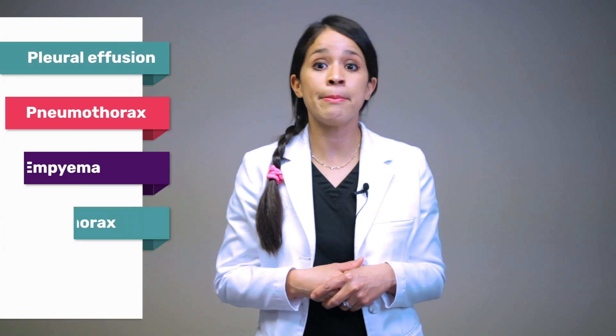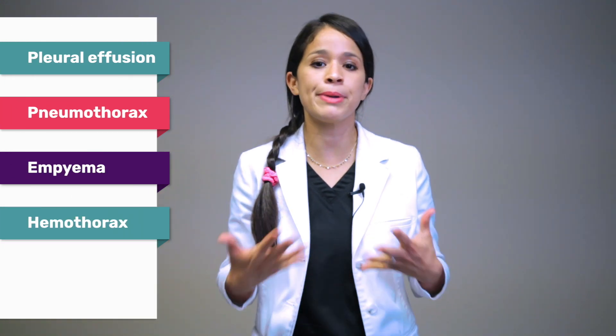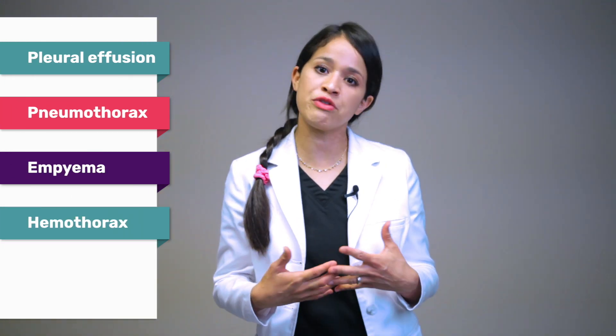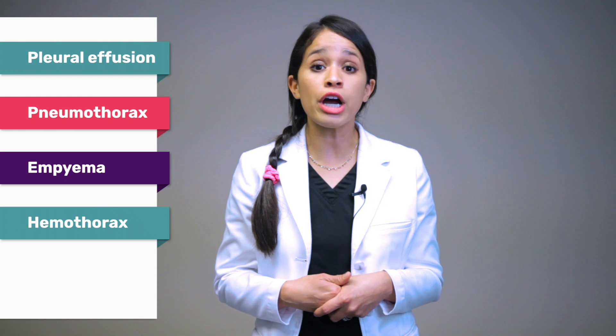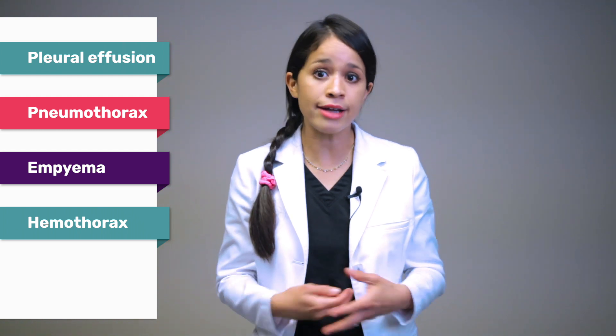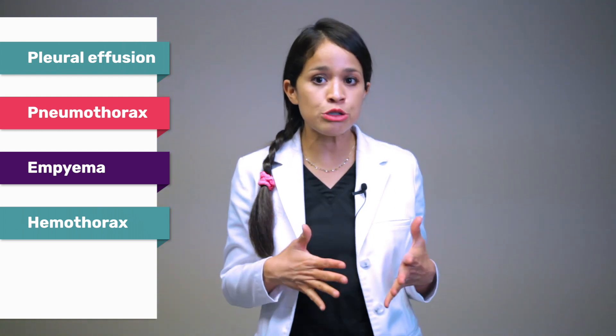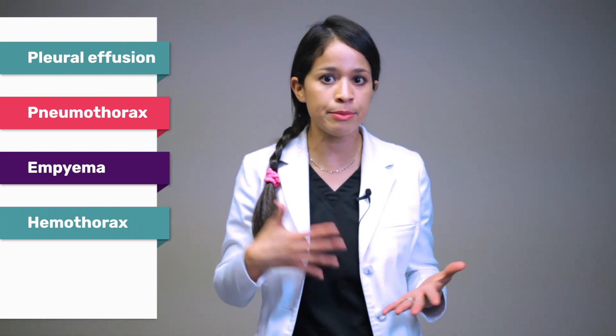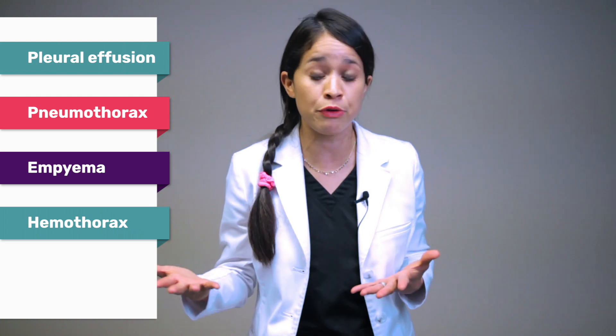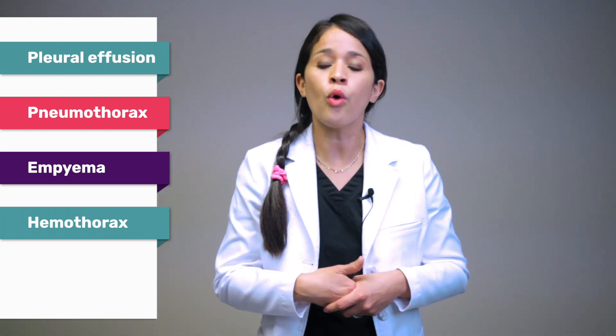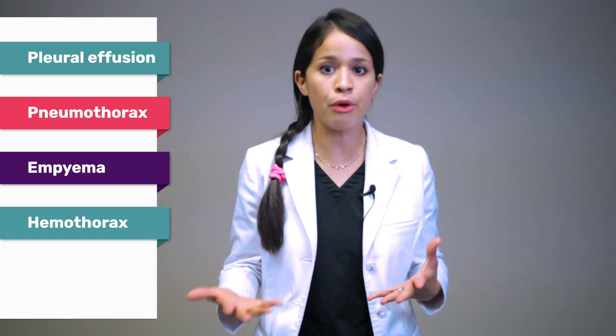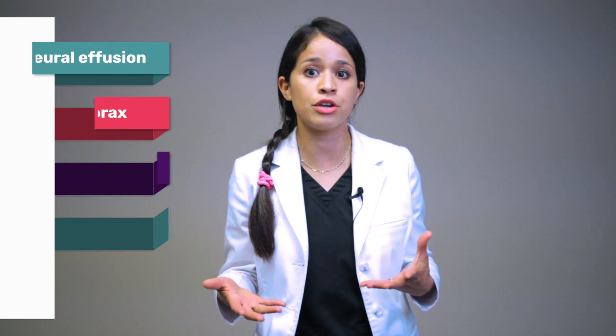Chest tubes are used to remove fluid or air to help re-expand the lung for patients that have a pleural effusion, where there is a buildup of fluid from the lining of the chest, or a pneumothorax, which is air that enters the space between the lungs and the chest wall. It could also be from an infection referred to as an empyema, or a hemothorax, which is blood that collects within your lungs and chest wall.